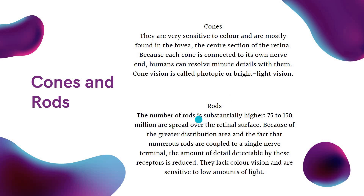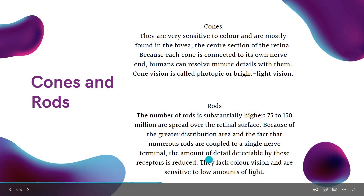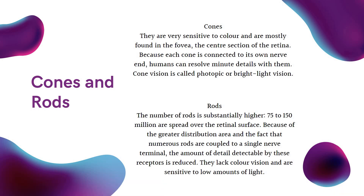On the other hand, rods are substantially higher in number. But because of this high number, numerous rods are connected to a single neuron. This results in them not being able to take in a lot of detail, and they also lack color vision. But they are sensitive to low amounts of light. So whenever there is less light in the environment, the eye switches to the rods — and that is the reason you are not able to take in a lot of detail or perceive things clearly at night.